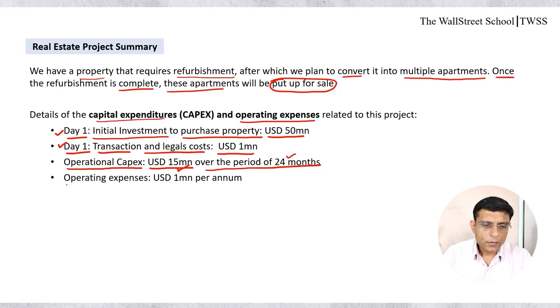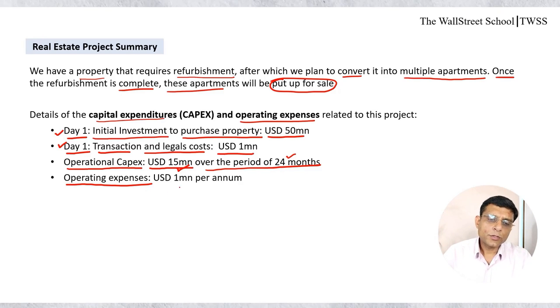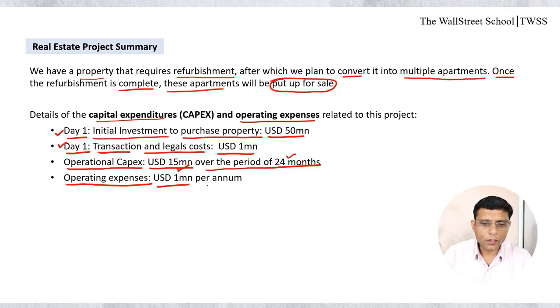There would also be some operating expenses — marketing expenses, admin team expenses, and similar costs. These operating expenses would be $1 million per annum. So these are the capex and operating expense assumptions related to this project.